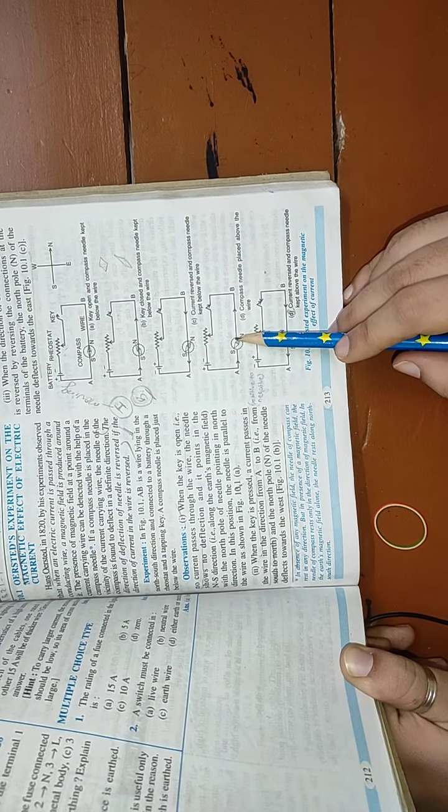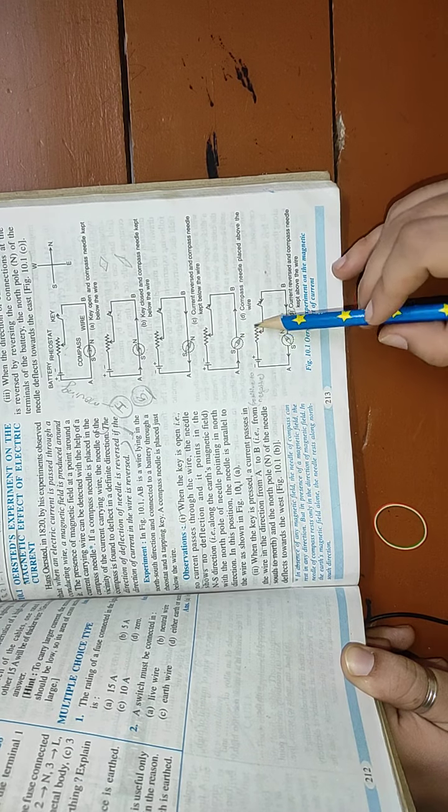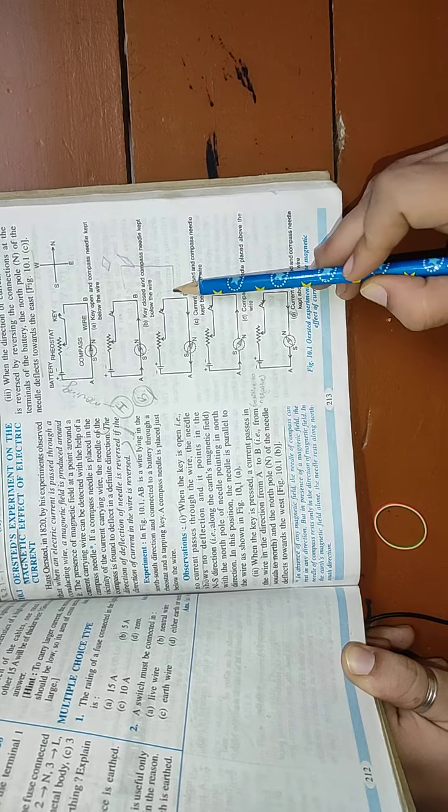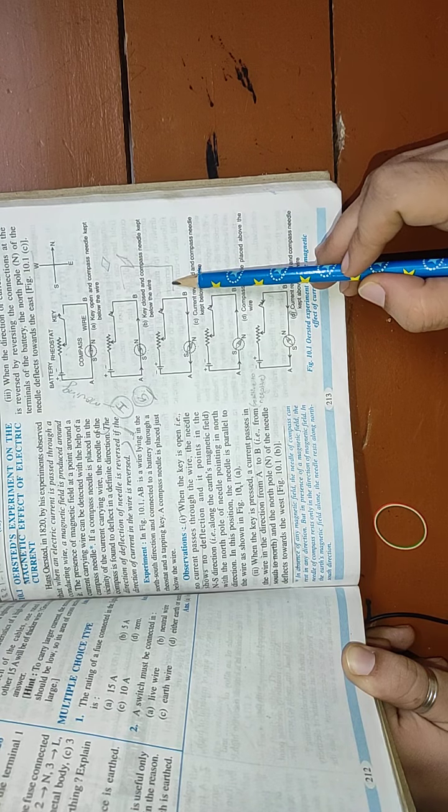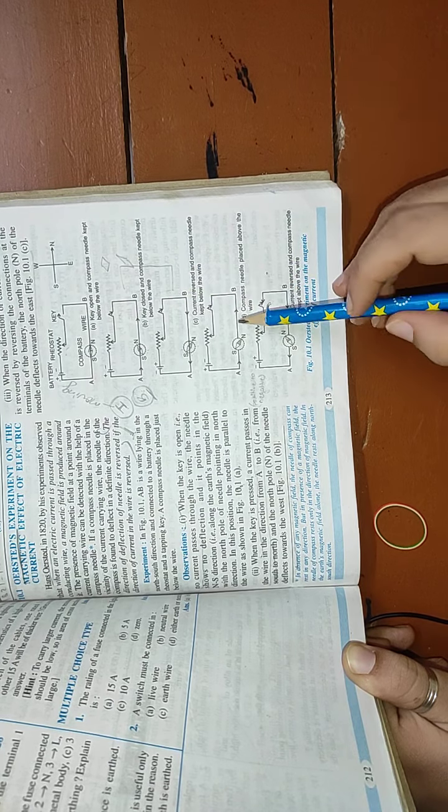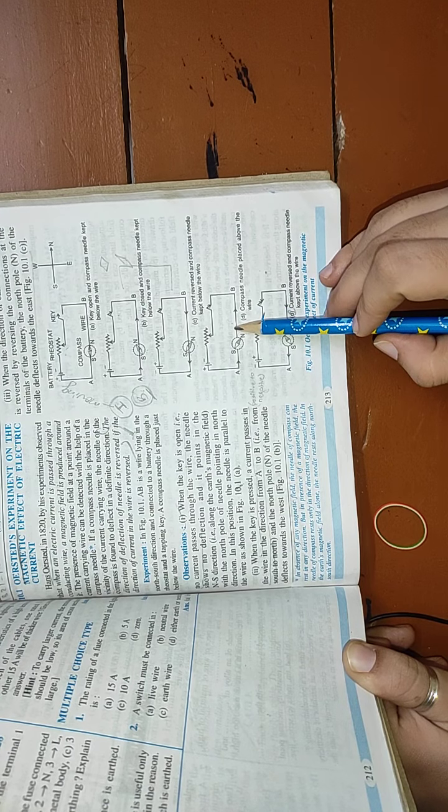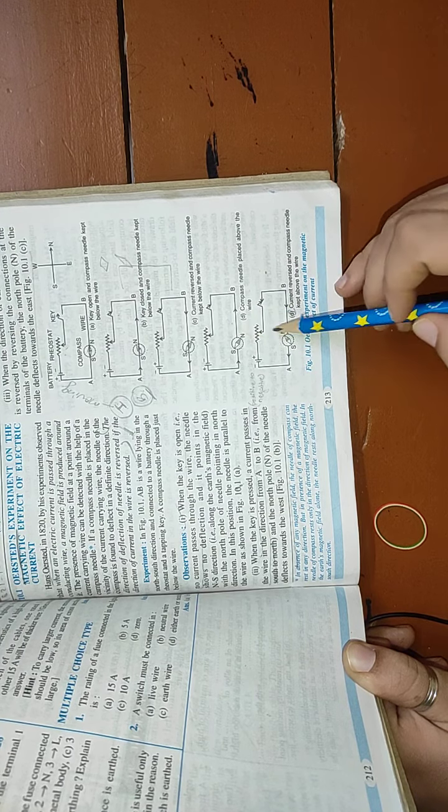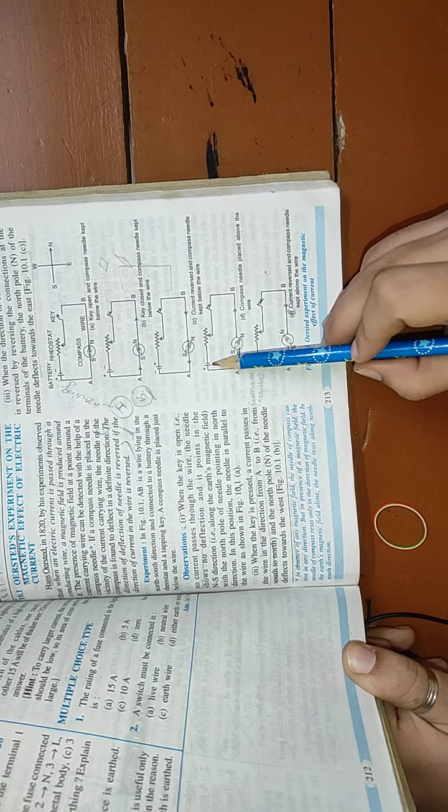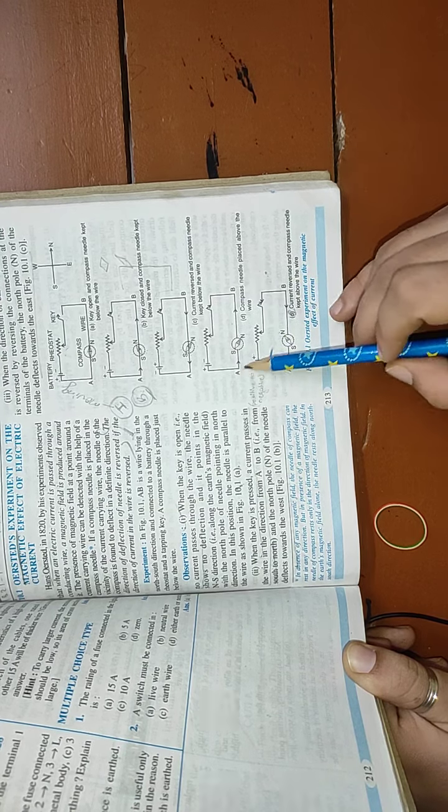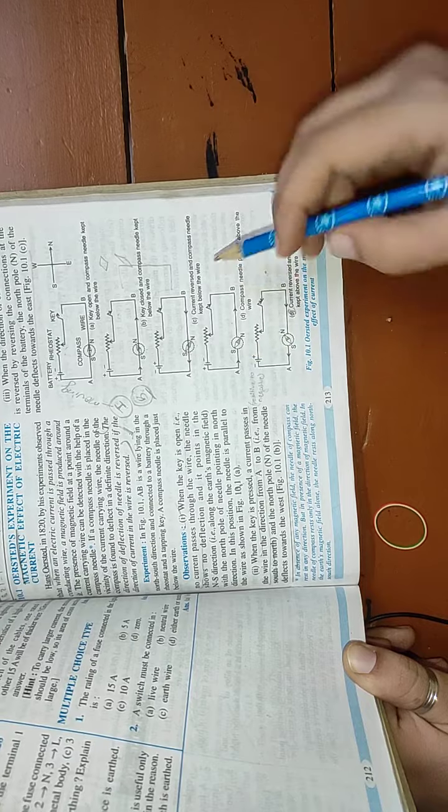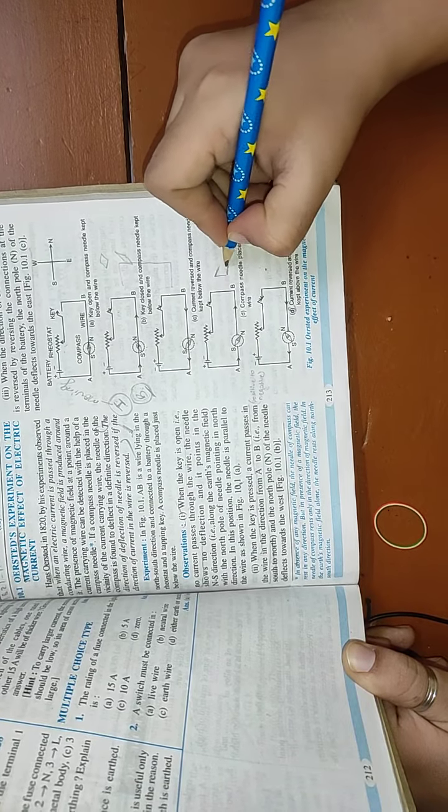Then here you can see, in the fourth case. In these two cases, the compass needle was kept below the wire. And now in this fourth case and fifth case, the compass needle is kept above the wire. So the same case you can see. Suppose if the current is flowing from A to B end, the needle is deflecting this way.